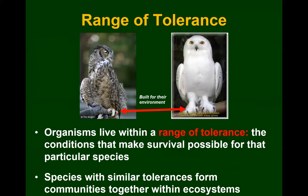Organisms live within a range of tolerance — the conditions that make survival possible for that particular species. Species with similar ranges of tolerance form communities within ecosystems. For example, arctic hare, snowy owl, and polar bear form an arctic community, while black bear, great horned owl, and cottontail rabbit form more of an Appalachian community. Animals are typically built for their environment — they've adapted to it.